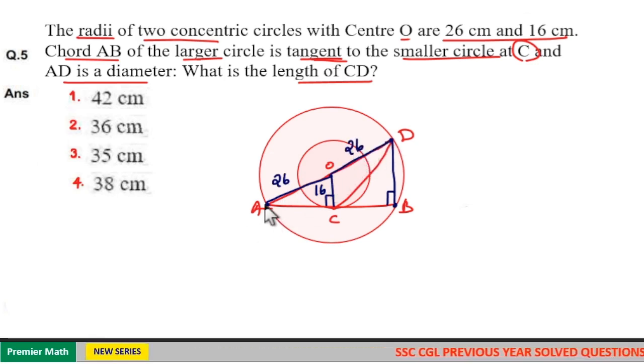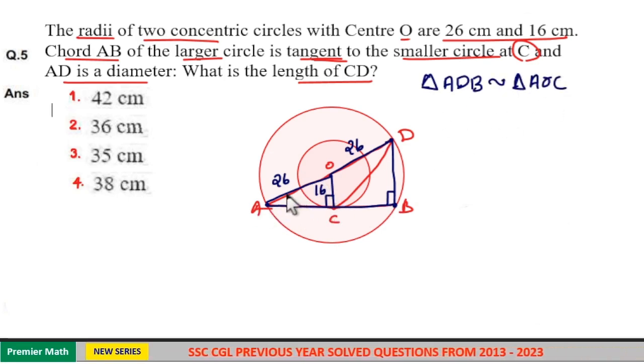Now, this larger triangle ADB is similar to this smaller triangle AOC. That is, these two are radii, and here this point A is common. So these two are similar triangles, means ratio of corresponding sides are equal.